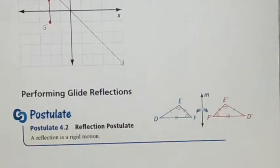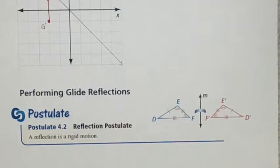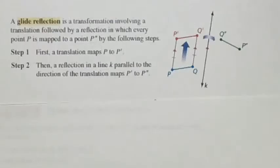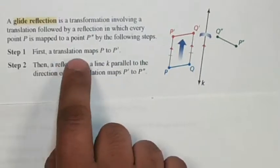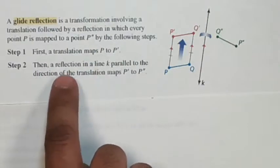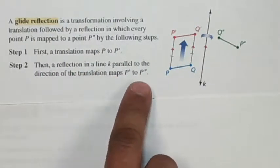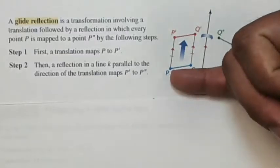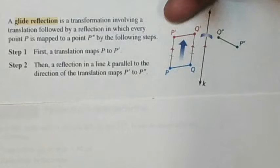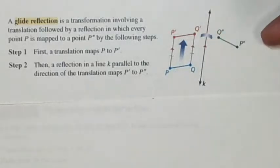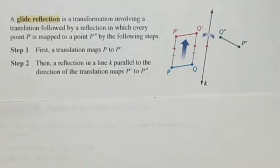The reflection postulate simply states that a reflection is a rigid motion. A glide reflection is a transformation involving a translation followed by a reflection — like a composition from section 4.1 where you do multiple steps. Every point P is mapped to P double prime: first a translation takes P to P prime, then a reflection takes P prime to P double prime.